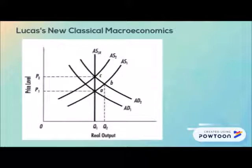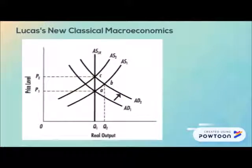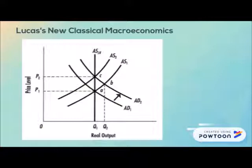Suppose the economy starts at point A. An unexpected surge in investment spending increases aggregate demand. Producers experience rising prices and expect higher profits; they increase employment and output, moving the economy from A to B. The short-run aggregate supply curve is upward sloping, so both price level and real output increase.